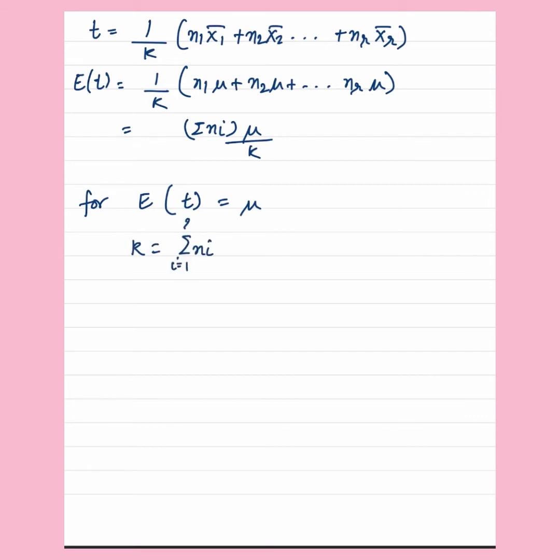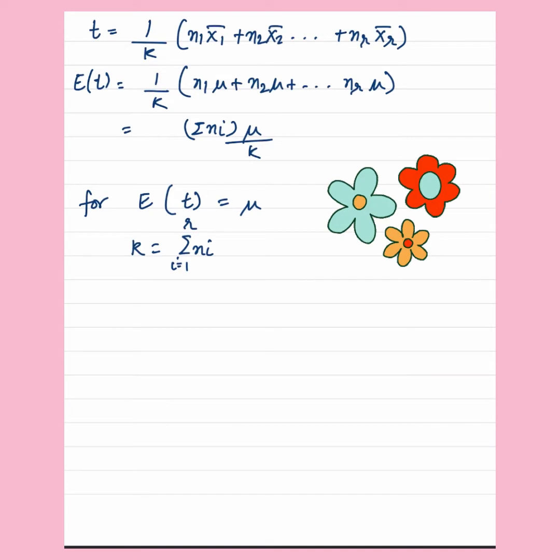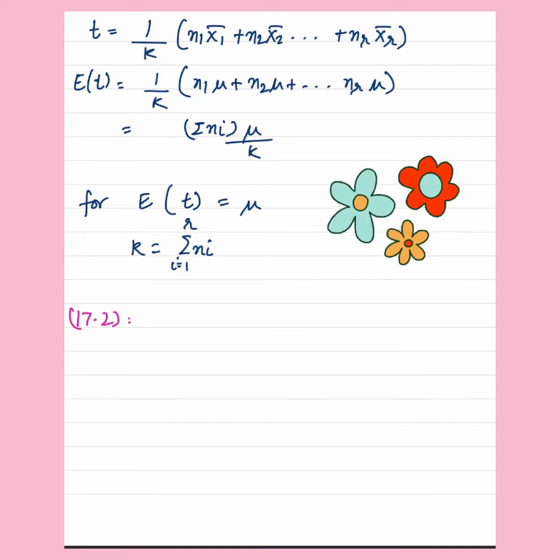For T to be an unbiased estimator of mu, k equals summation of Ni. Moving on to the next question, 17.2.